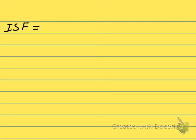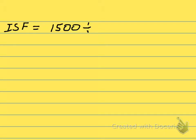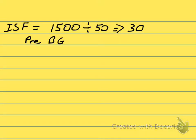Now we have to figure out the insulin sensitivity factor using the 1500 rule. We take 1500 and divide by our total daily dose of 50 units, which gives us 30. This means each unit of insulin will lower blood glucose by 30 mg/dL. Our pre-meal blood glucose was 210 and our target is 120.